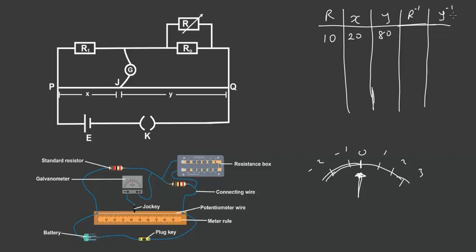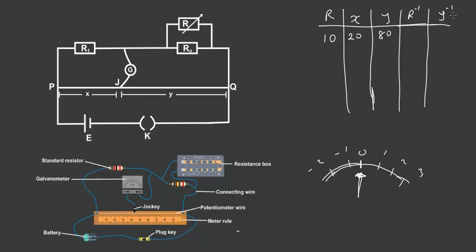So you change the reading on the resistance box, adjust the jockey along the potentiometer wire until the galvanometer reads zero, then stop. You take the X value, you read the Y value, you take the reciprocal of R and the reciprocal of Y, and that makes up your table of readings.